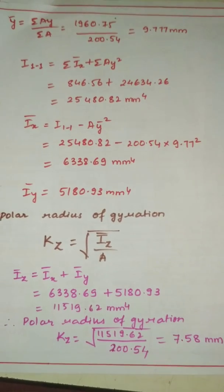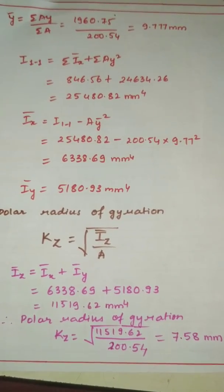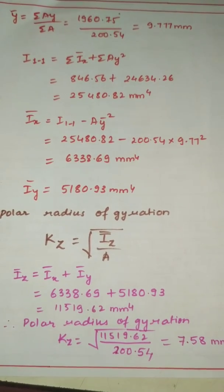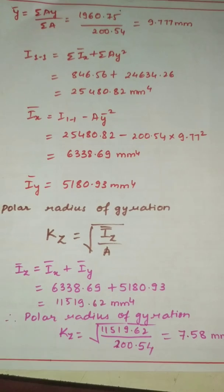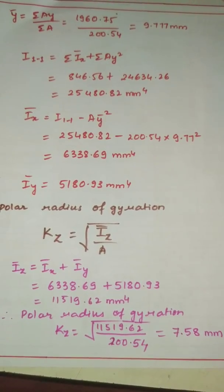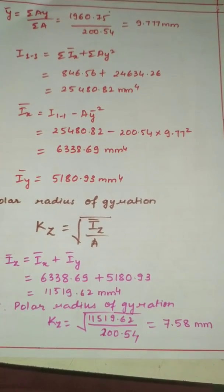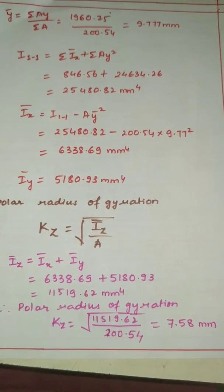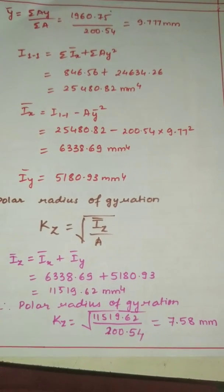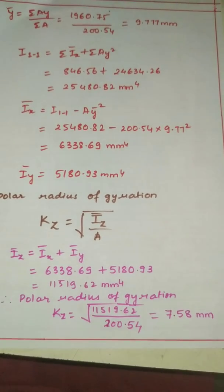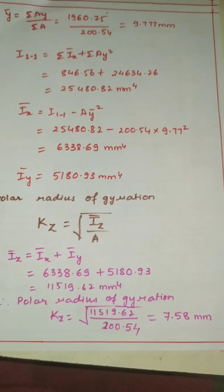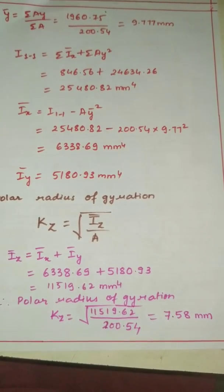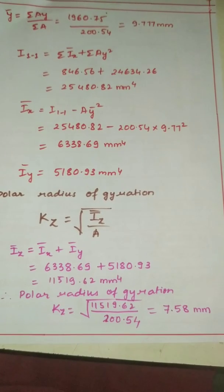If you want to find the polar radius of gyration K_Z, the formula is square root of I_Z̄ / A. First, I_Z̄ = summation of I_x̄ + I_ȳ = 6338.69 + 5180.93 = 11519.62 mm⁴. Then K_Z = √(11519.62 / 200.54) = 7.58 mm. The units work out as mm⁴ divided by mm² gives mm², and the square root gives mm. So the polar radius of gyration is 7.58 mm.